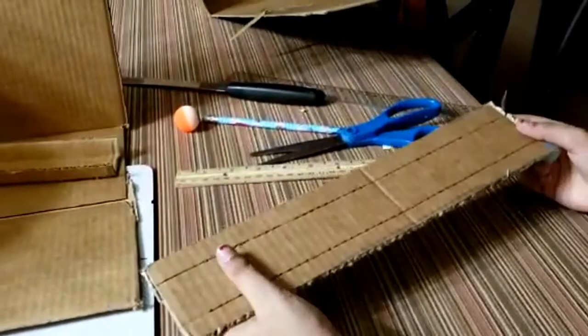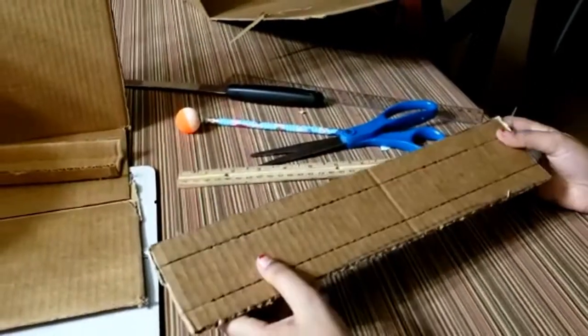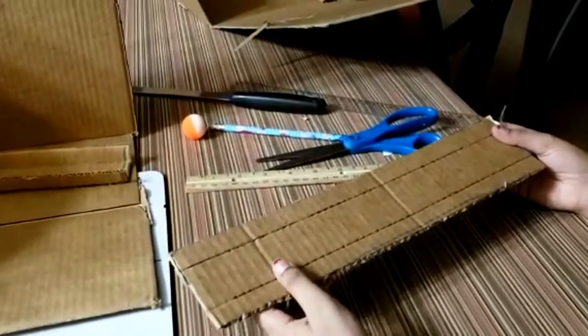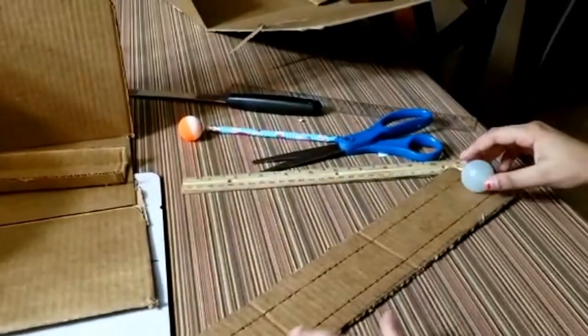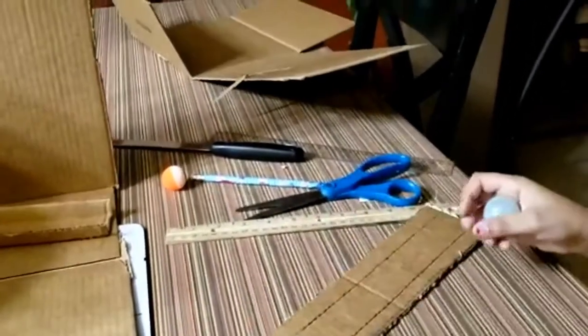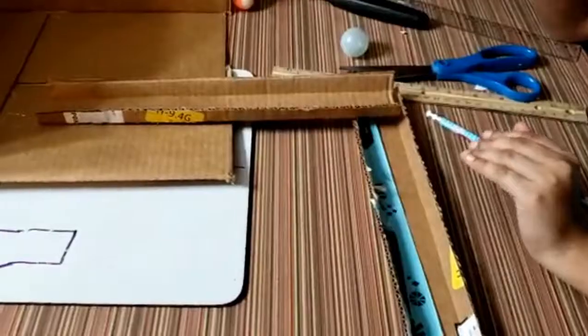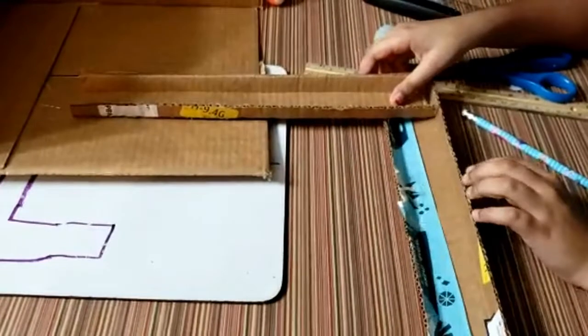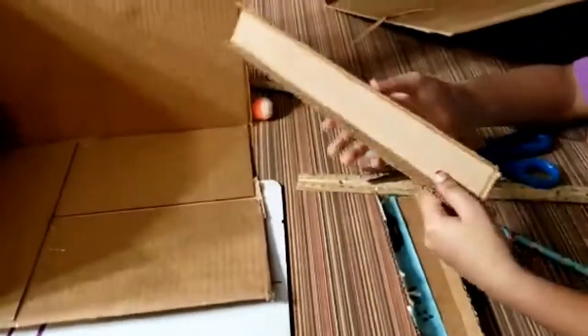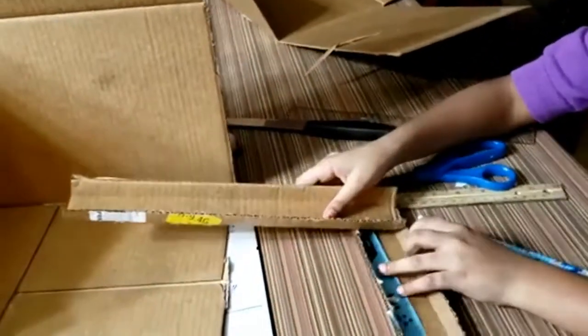We are going to make a few more ramps. Make sure that your ramps have enough space for the ball to roll down and so that we can cut some off. Now we are going to make our ramps so that this ramp overlaps.